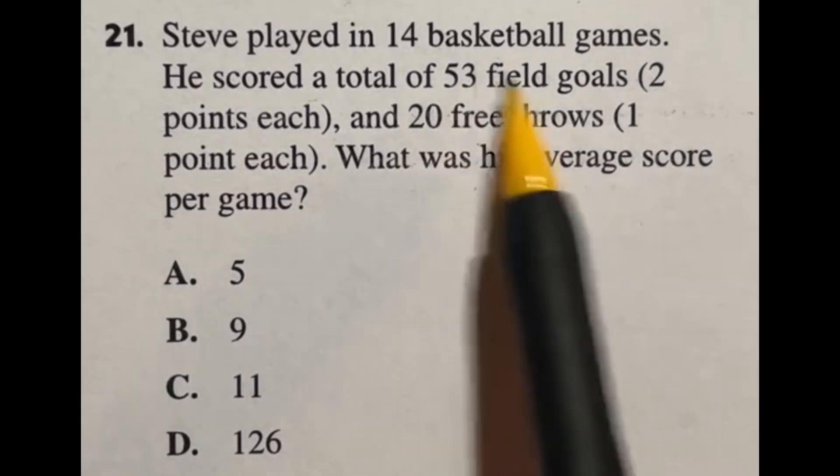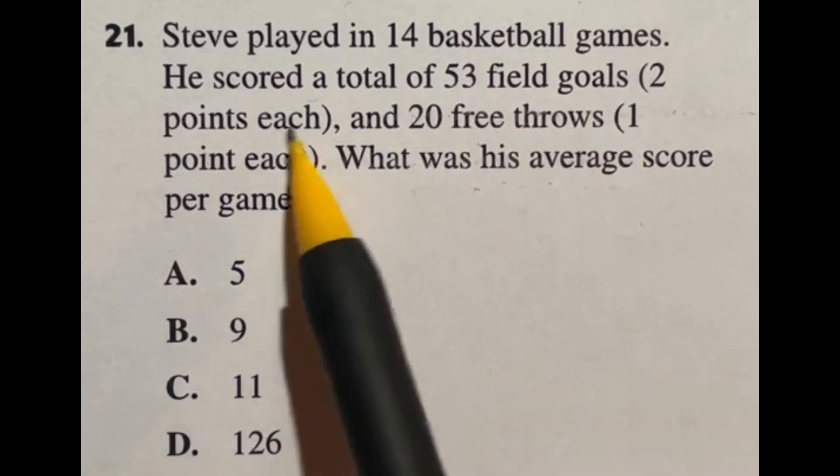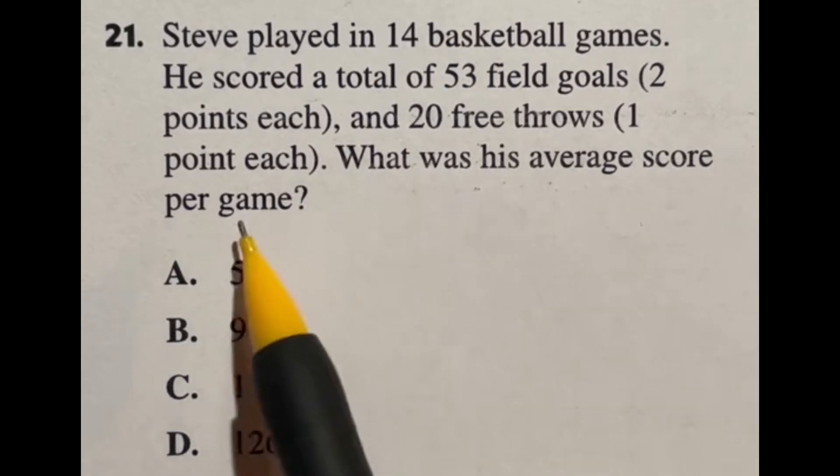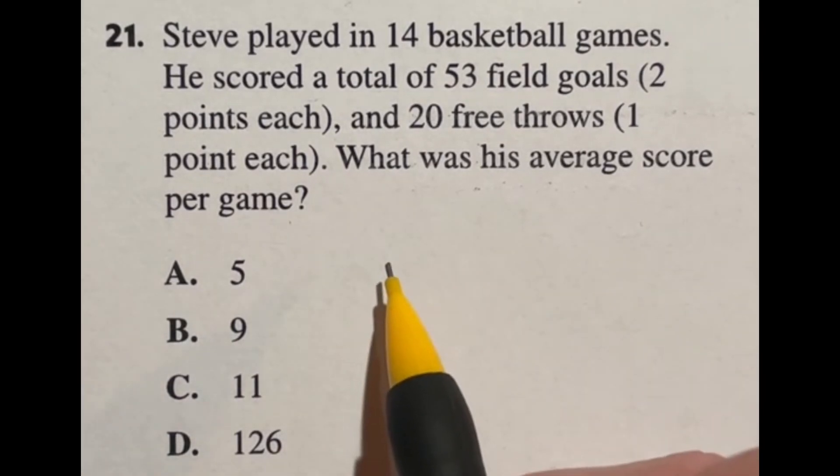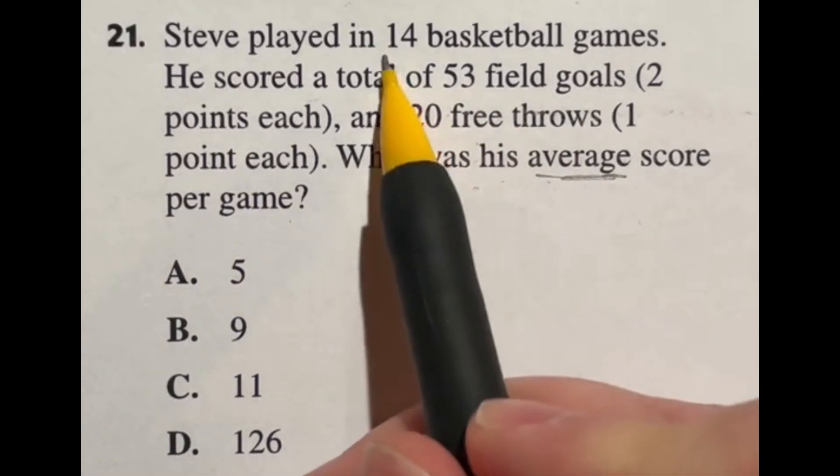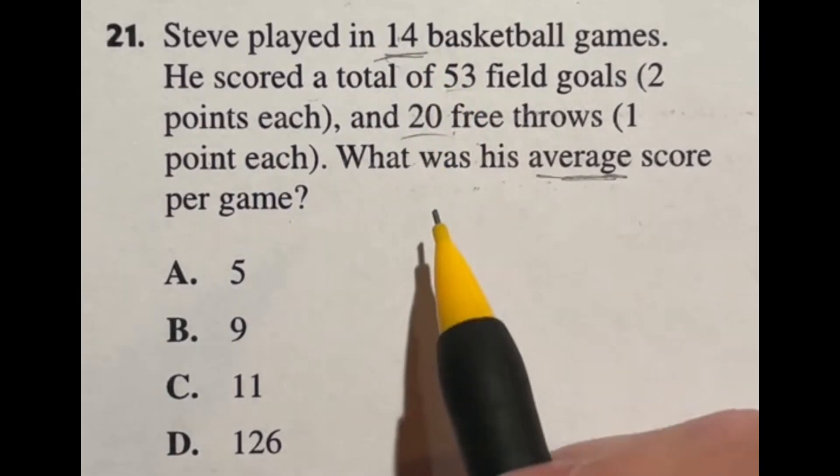Steve played in 14 basketball games. He scored a total of 53 field goals with two points each and 20 free throws, one point each. What was his average score per game? This is question number 21. In this case we're finding an average, so since he played 14 games we're going to find his total number of points and divide that answer by 14.